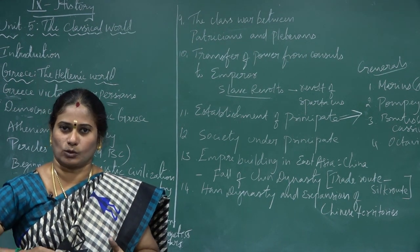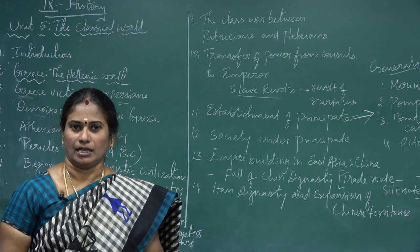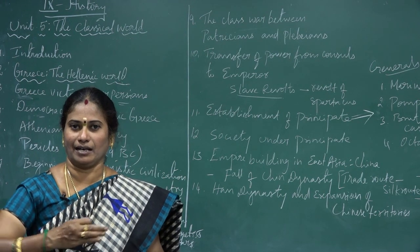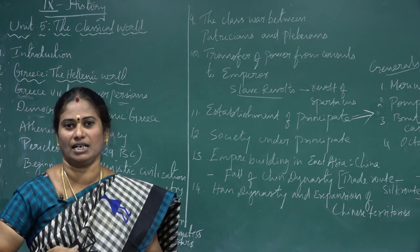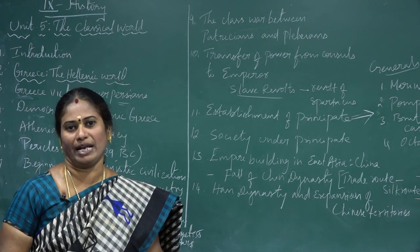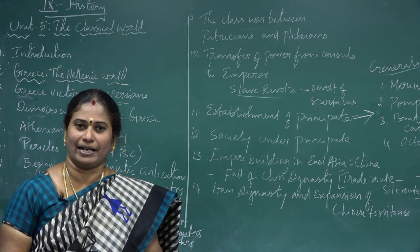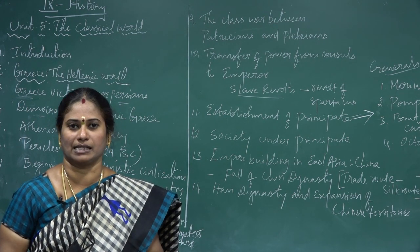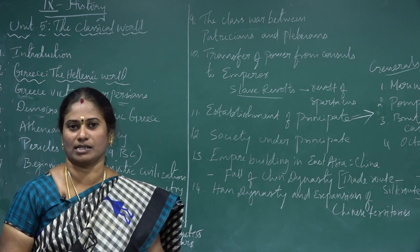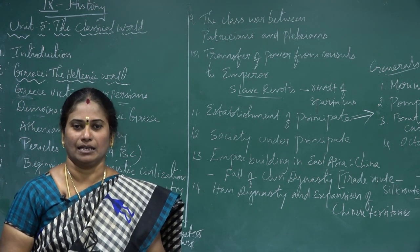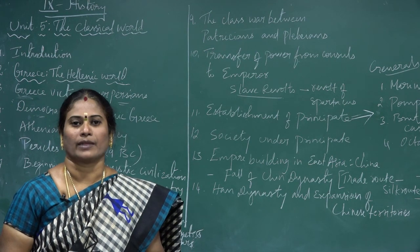Rome was a society full of agriculturists. They came through the lineages of the traditional ruling party. The Roman people were divided into two classes: one is patricians - rich landlords - and the other is plebeians, that is, common people.